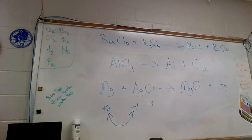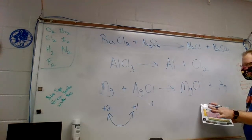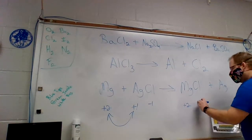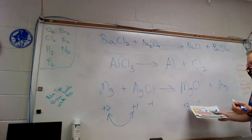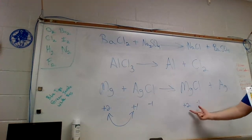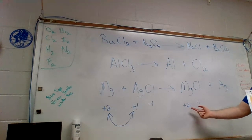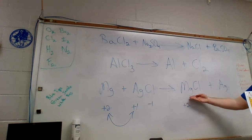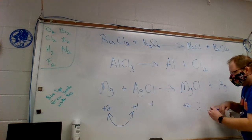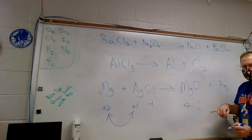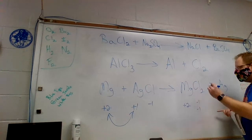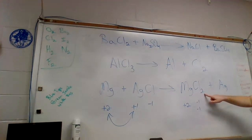So Mg and Ag have just switched places. But now I need to check the charges: magnesium is plus two and chlorine is minus one, so they don't balance. I need two minus ones to equal out with that plus two. So the correct formula for magnesium chloride is MgCl2 — I adjust the subscript so the charges balance out.